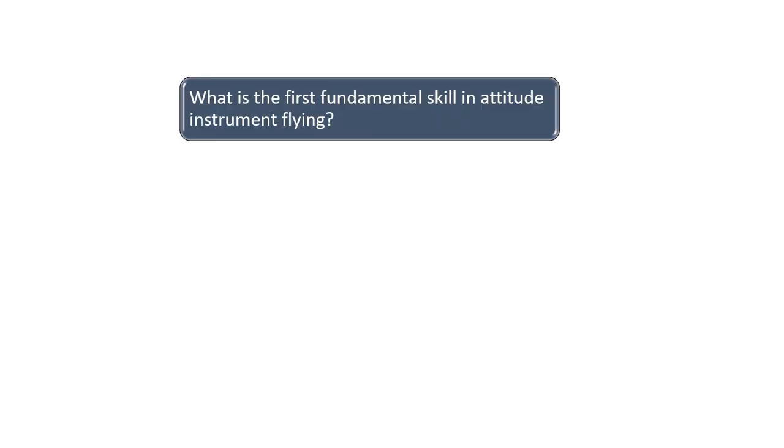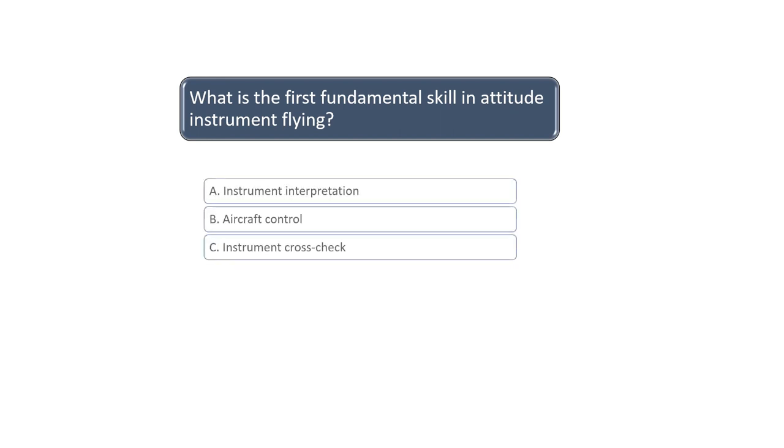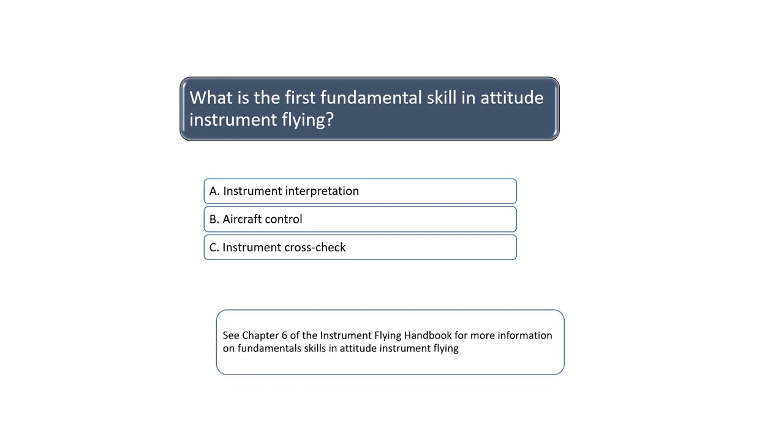What is the first fundamental skill in attitude instrument flying? During attitude instrument training, the pilot must develop three fundamental skills. These skills must be performed in order or else they will not be effective. The order is instrument crosscheck, instrument interpretation, and aircraft control. See Chapter 6 of the Instrument Flying Handbook for more information on fundamental skills in attitude instrument flying.